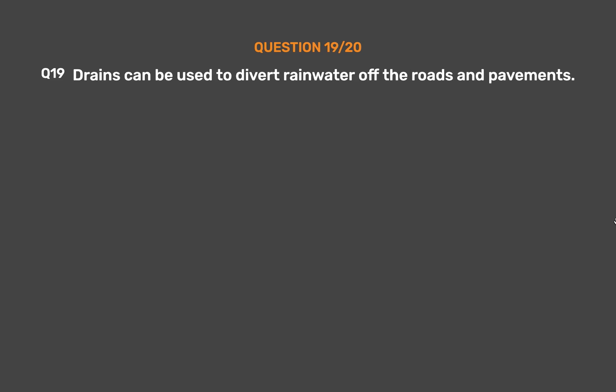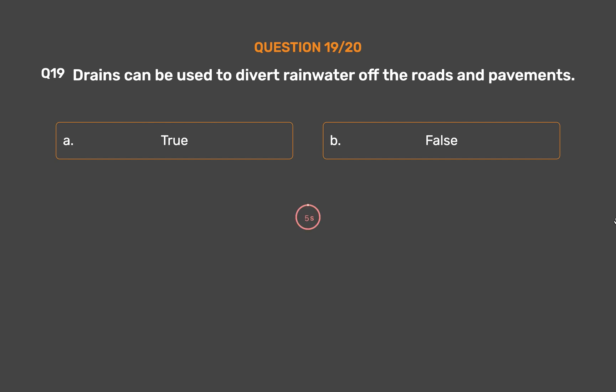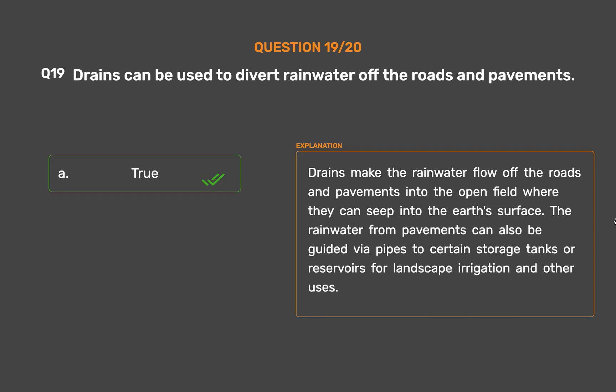Question number 19. Drains can be used to divert rainwater off the roads and pavements. Option A: True. Option B: False. The correct answer is Option A: True. Drains make rainwater flow off roads and pavements into open fields where it can seep into the earth's surface. Rainwater from pavements can also be guided via pipes to storage tanks or reservoirs for landscape irrigation and other uses.